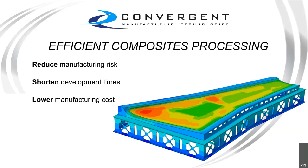This is our quick advertisement for Convergence. We focus on reducing risk and cost in composite processing. We have a lot of different tools — anything from software packages to testing that feeds those packages, as well as hardware and tools for processing aids like our Coho Vacuum Leak Detection System. Today we're focusing on one of the flagship softwares, which is Compro, and we'll go through examples of how it can be used to help reduce risk.